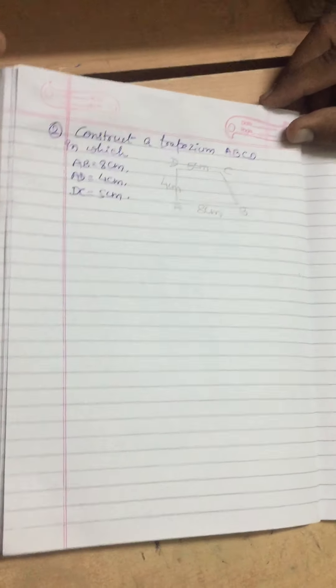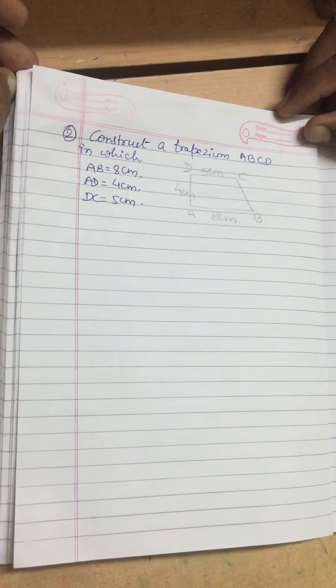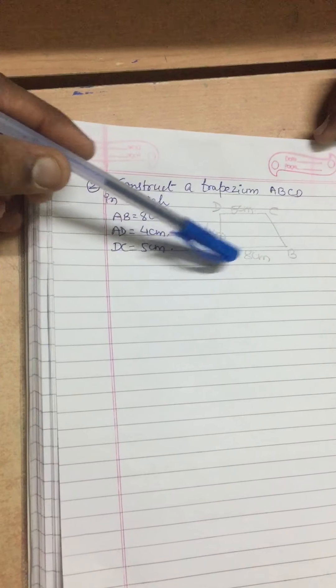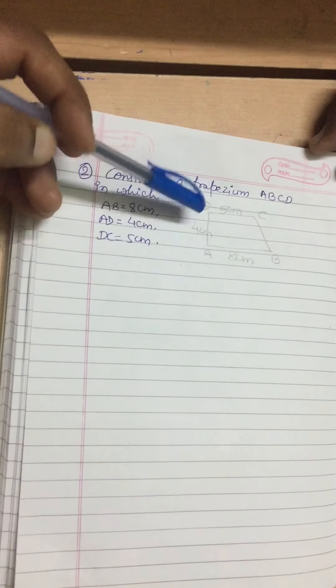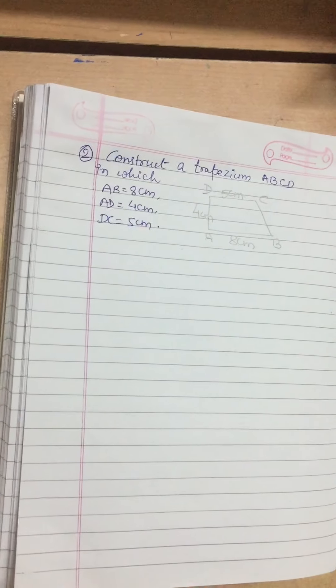Hello students, today I am going to take a query regarding the construction of a trapezium. I have one example with me. I have to construct a trapezium ABCD in which AB is 8 centimeter, AD is 4 centimeter, and DC is 5 centimeter. We have not been provided any other information, whether any angle.